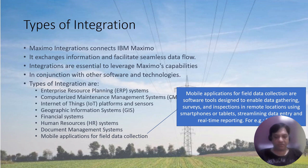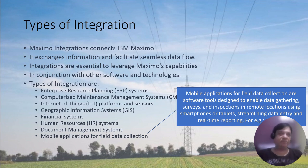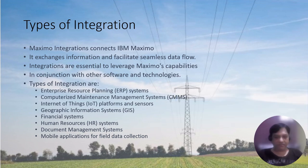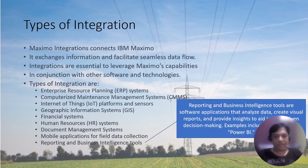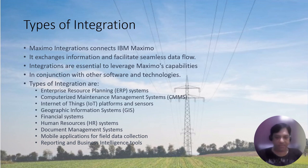Eighth are mobile applications for data collection, designed to enable data gathering, surveys, and inspections in remote locations using smartphones and other devices for real-time reporting. Ninth are reporting and business intelligence tools — software applications that analyze data, create visual reports, and provide insights. An example is Power BI.